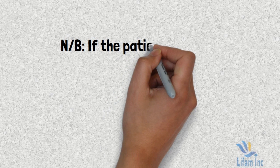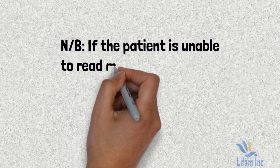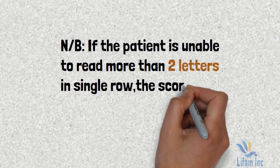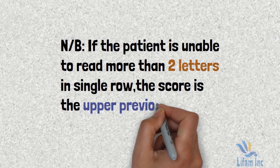The key rule is: if the patient is unable to read more than two letters on a given row, you score the patient based on the previous upper row.